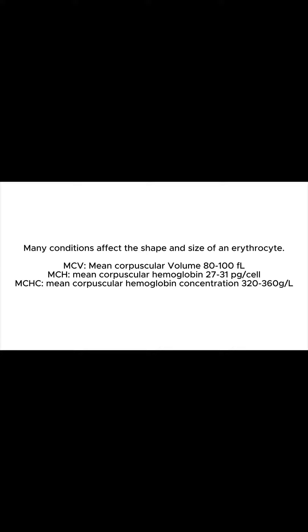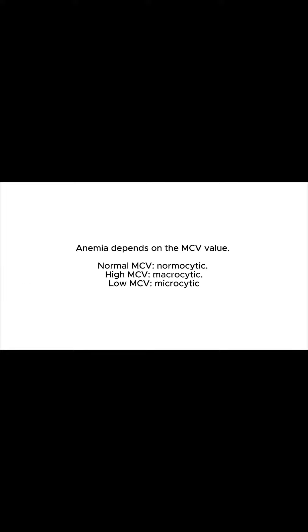There are many conditions that lead to abnormality in erythrocytes, affecting the shape and size of the cell. The measurement of mean corpuscular volume (MCV), mean corpuscular hemoglobin (MCH), and mean corpuscular hemoglobin concentration (MCHC) determines if the erythrocyte is normal or not. If analysis of these variables shows a value outside the reference range, it indicates anemia caused by various conditions.